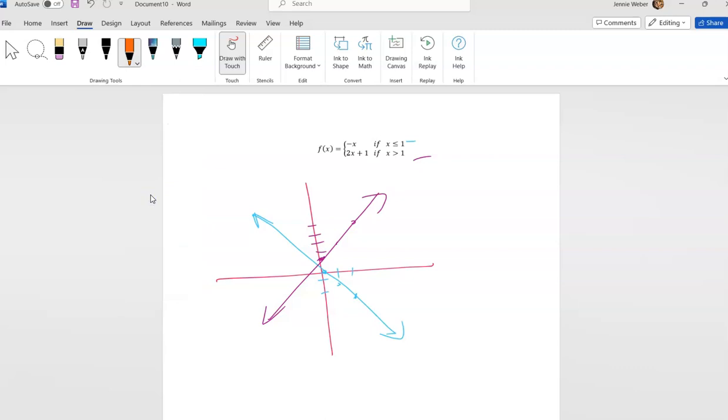What I'm gonna do is figure out what's happening at one. Up here, this point at one will be negative one, so this will be (1, -1). What's happening down here? If I put one into here, I get two times one is two, plus one is three, so (1, 3).